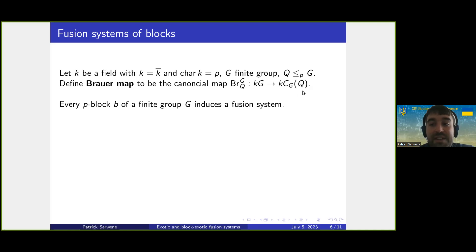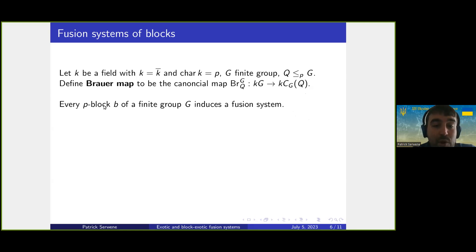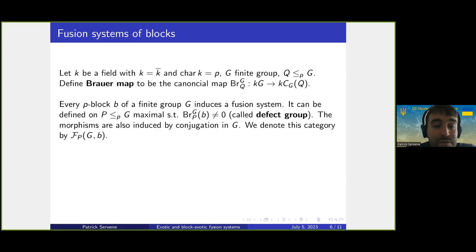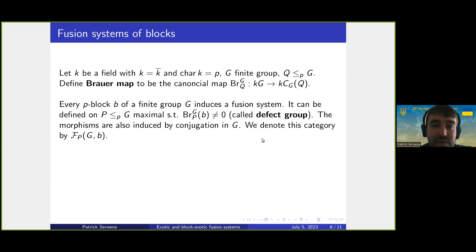Every p-block b of a finite group G — meaning a primitive central idempotent of kG — induces a fusion system. This fusion system is defined on a p-subgroup P of G that is maximal with the condition that the Brauer map applied to b is non-zero; such a subgroup is called the defect group of the block. The morphisms are induced by conjugation in G, and the category is denoted F_P(G,b).